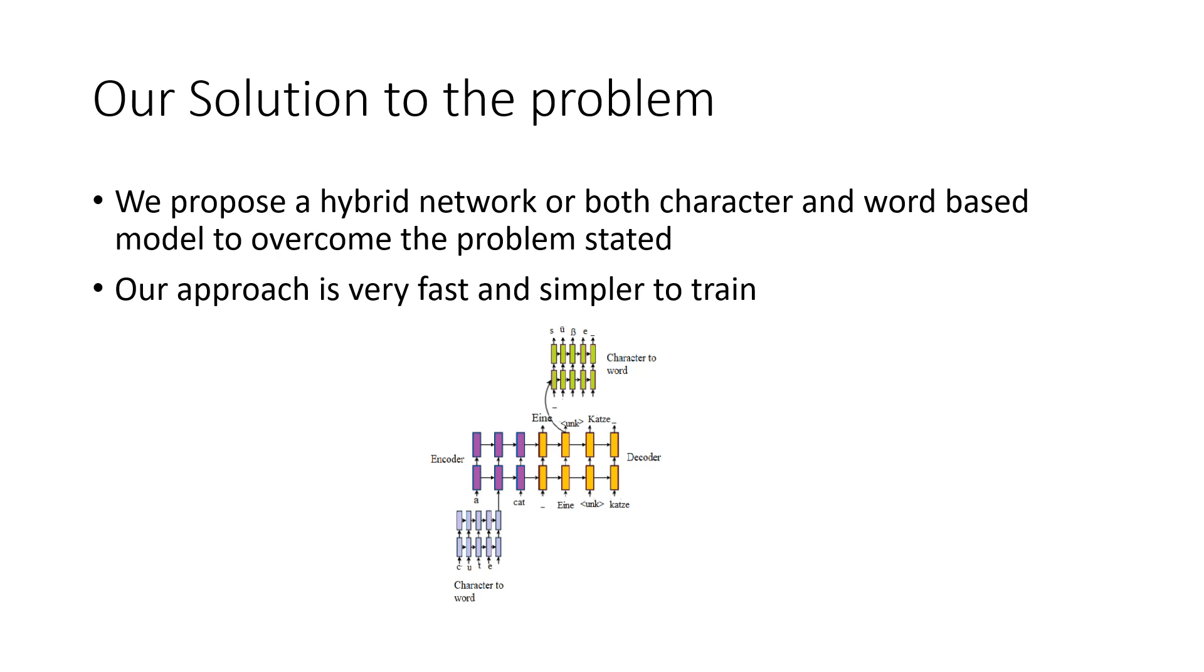As a solution, we propose a hybrid model where we want to use both the word-based model as well as the character-based model to overcome the problem. For frequent words that we see very often, we will use the word-based or encoder-decoder model to predict the target word. And for the rare words that occur not very frequently, we use the character-level model, which is mapped to the input of the word-level model.